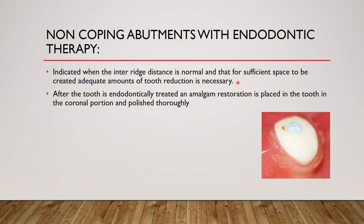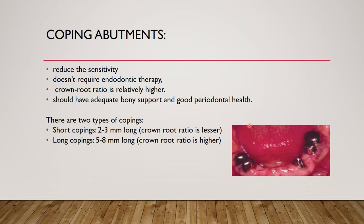Non-coping abutments with endodontic therapy are indicated when interarch space is normal and adequate tooth reduction is possible. After the tooth is endodontically treated, an amalgam or composite restoration is placed and polished, leaving approximately 2 mm above the ridge. An overdenture is then fabricated on top of this.